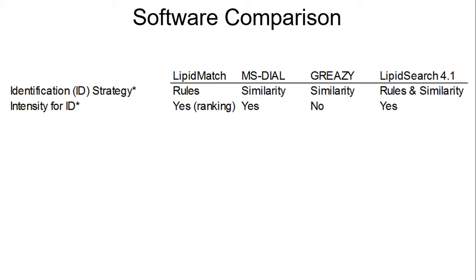On the other hand, MS-Dial and Greasy use similarity scores. In that case, they're comparing the in-silico spectra and how well it matches with the actual experimental spectra, with MS-Dial using a modified dot product method. This similarity scoring, because it's not rule-based, does not require fatty acyl chain-related fragments to be observed. Therefore, when MS-Dial and Greasy report their annotations by fatty acyl chain constituents, we're not sure unless we look manually at the spectra whether we actually saw fragments related to those fatty acyl chains, or whether the structure has been over-reported.